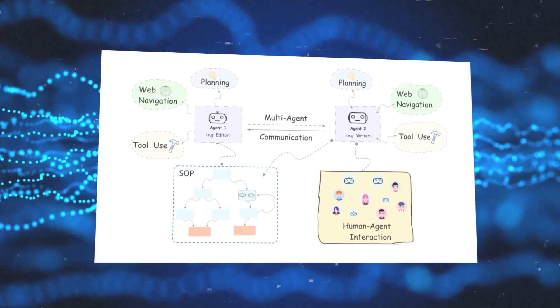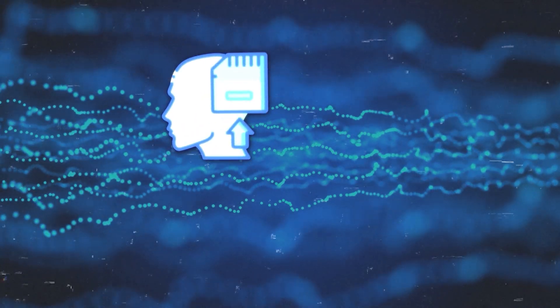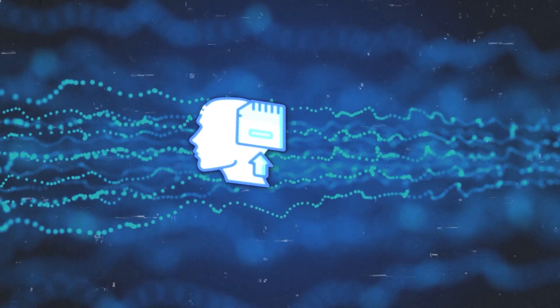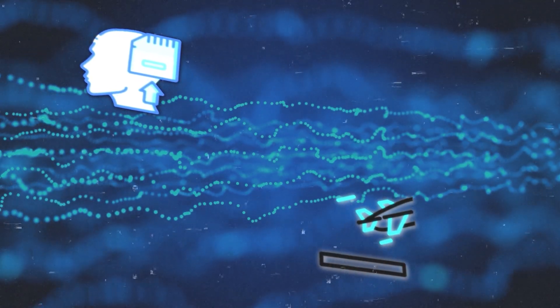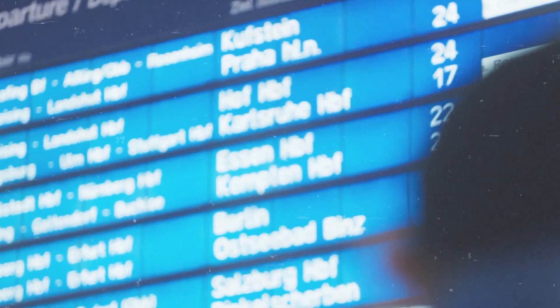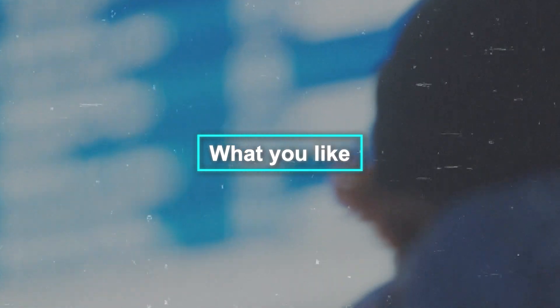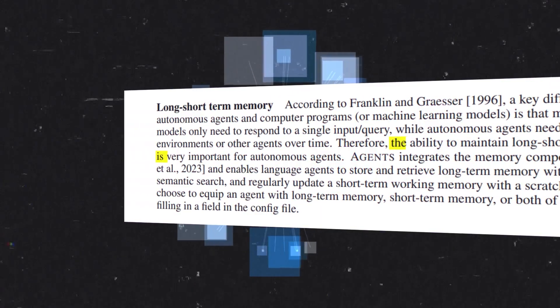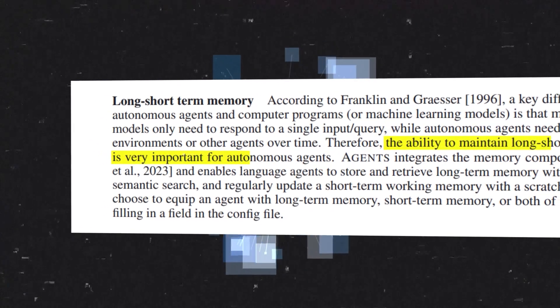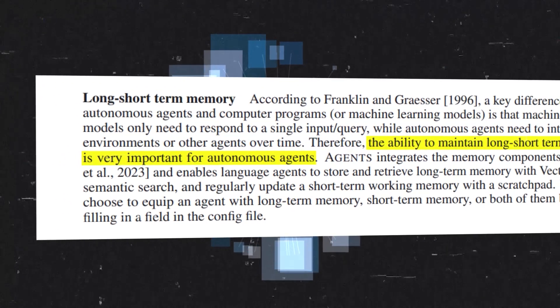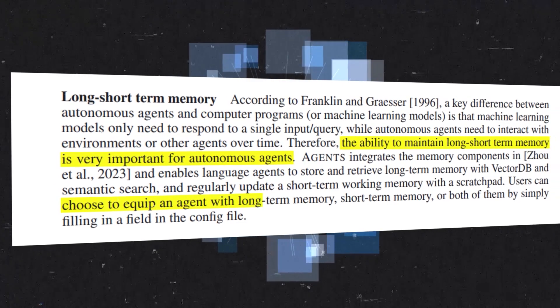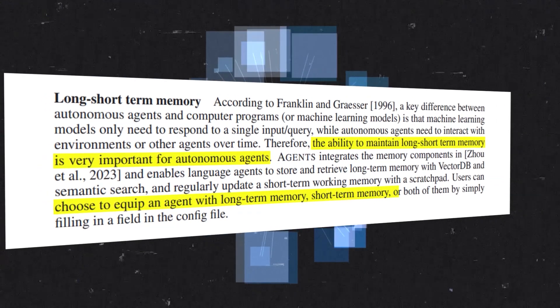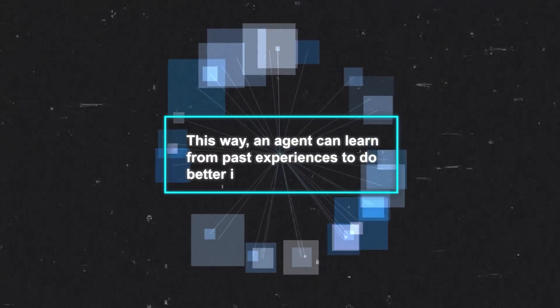Let's talk about memory. For language agents, memory is important because they need to save and use information for their tasks. Take booking a flight as an example — the agent needs to remember things like what you like, how much you want to spend, and when you're traveling. Agents has both short-term and long-term memory. The short-term memory holds info for what's happening right now, while the long-term memory keeps info for many tasks over a longer period, allowing an agent to learn from past experiences to do better in the future.